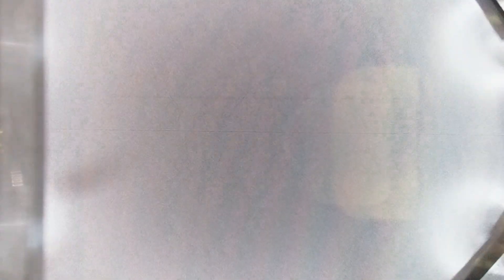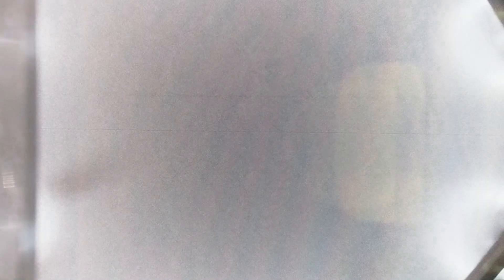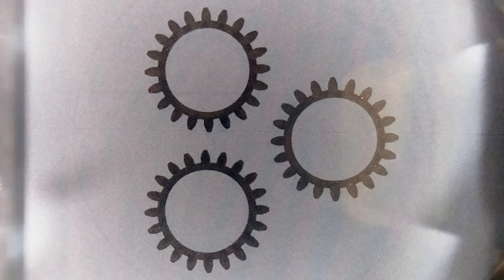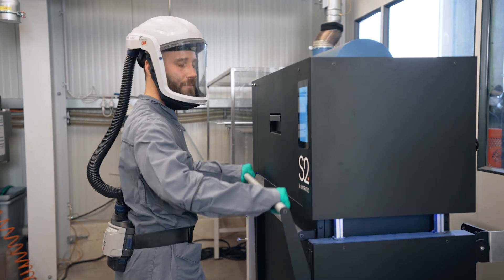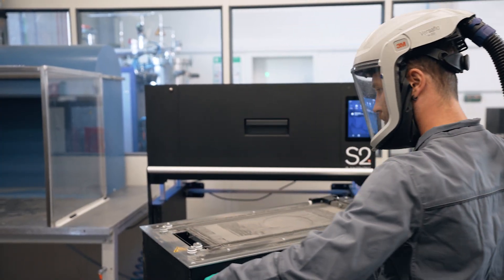What's really great now in Cold Metal Fusion is it's cold. We can print at 50 degrees Celsius in the build chamber and this makes the process very stable and you can reuse all of your powder that you do not print.